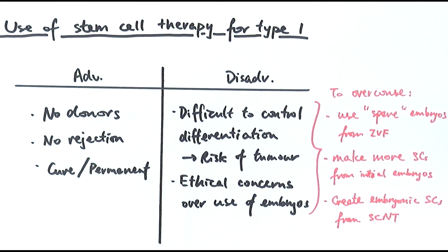In exam questions, you're likely to be asked to evaluate the use of stem cells as a type 1 diabetes treatment or cure, with particular focus on the disadvantages, and there will be links to chapter 22 on cloning and SCNT techniques. It's about making those cross-chapter links during revision so that in the exam you're less likely to panic.